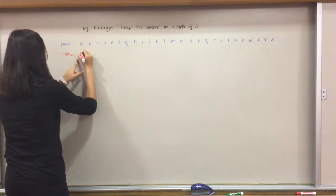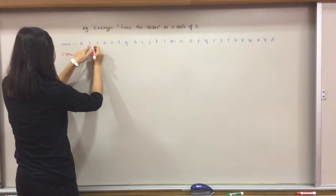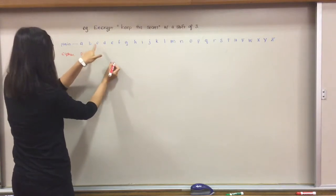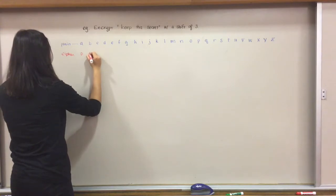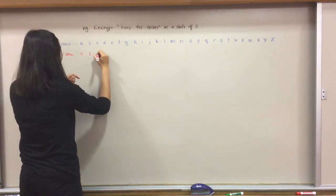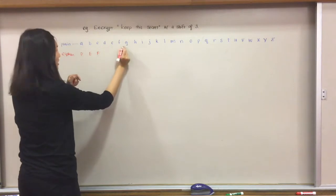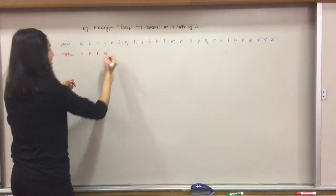And then same thing b, you shift three, one, two, three. So b is going to map onto e, and then same thing for c, that maps onto f, and then d maps onto g, et cetera.